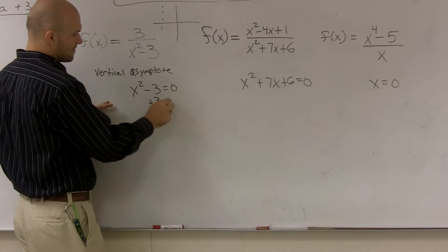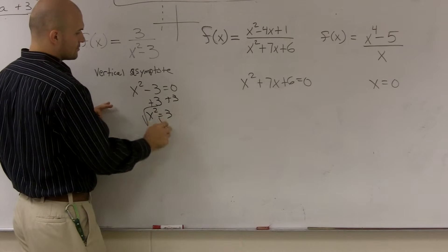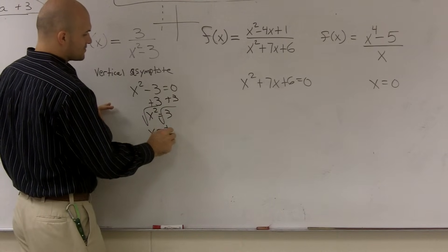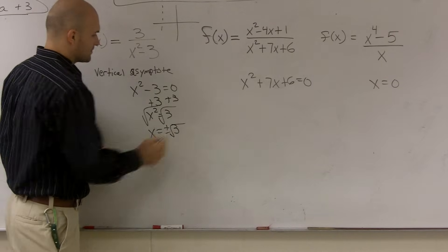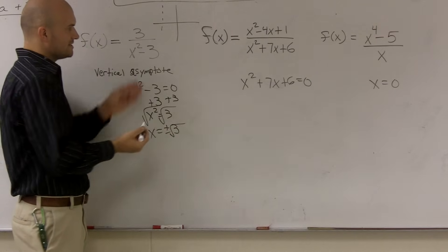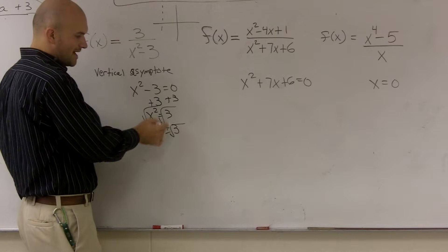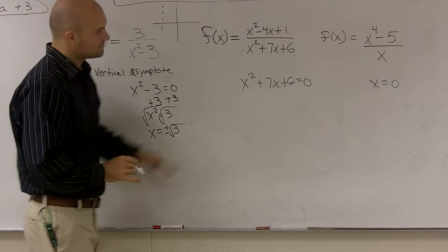So here, I'm just going to add 3. x squared equals 3. Square root. x equals plus or minus square root of 3. Right. So therefore, my vertical asymptote for this problem - the x values are x equals plus or minus the square root of 3.